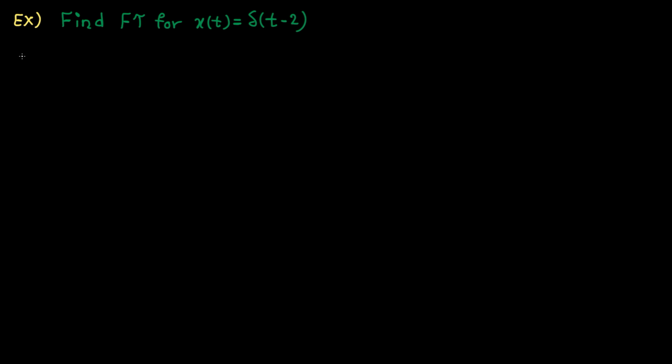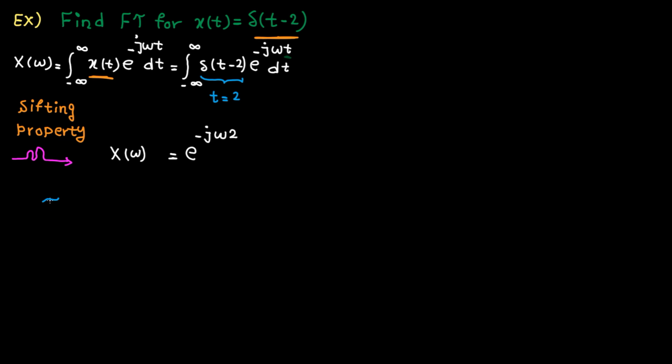Xt is the signal in time domain. By using Fourier transform, we want to travel to the frequency domain. Here is the integral for Fourier transform. Let's replace Xt with the delta function. The function is non-zero only at t equal to 2. Based on the sifting property that I already covered in the elementary signals lecture, we just need to replace t by 2. That's it. So again, we have started from time domain and by using Fourier transform, we travel to frequency domain.